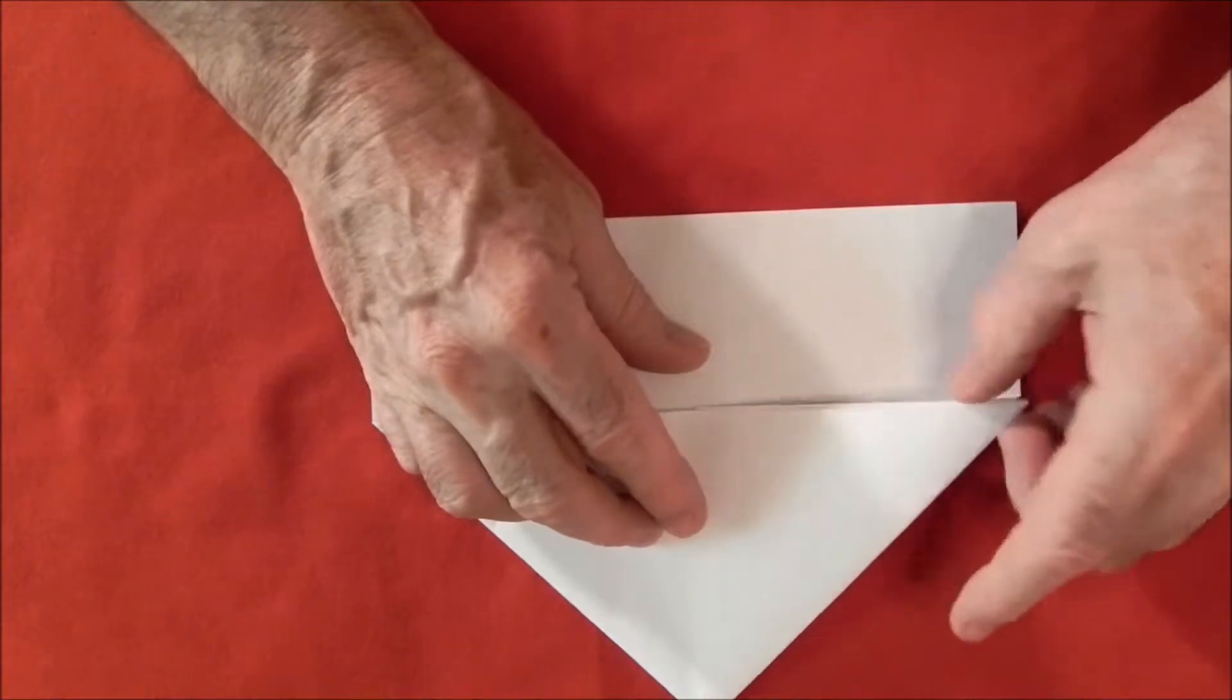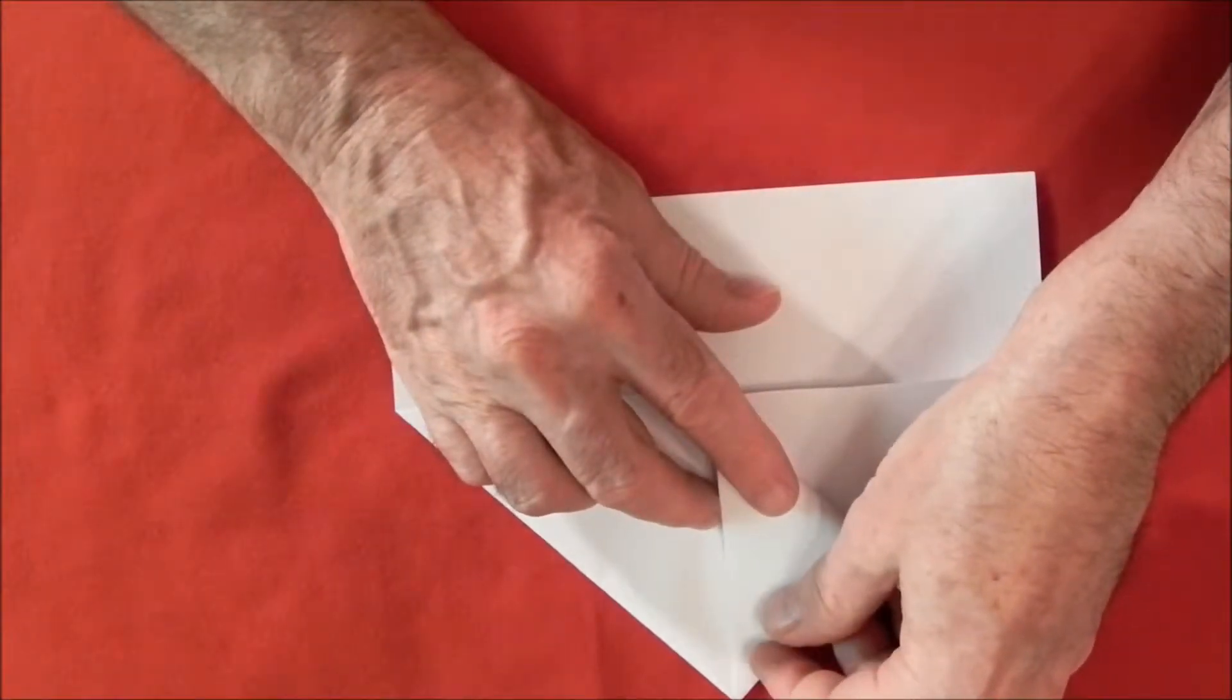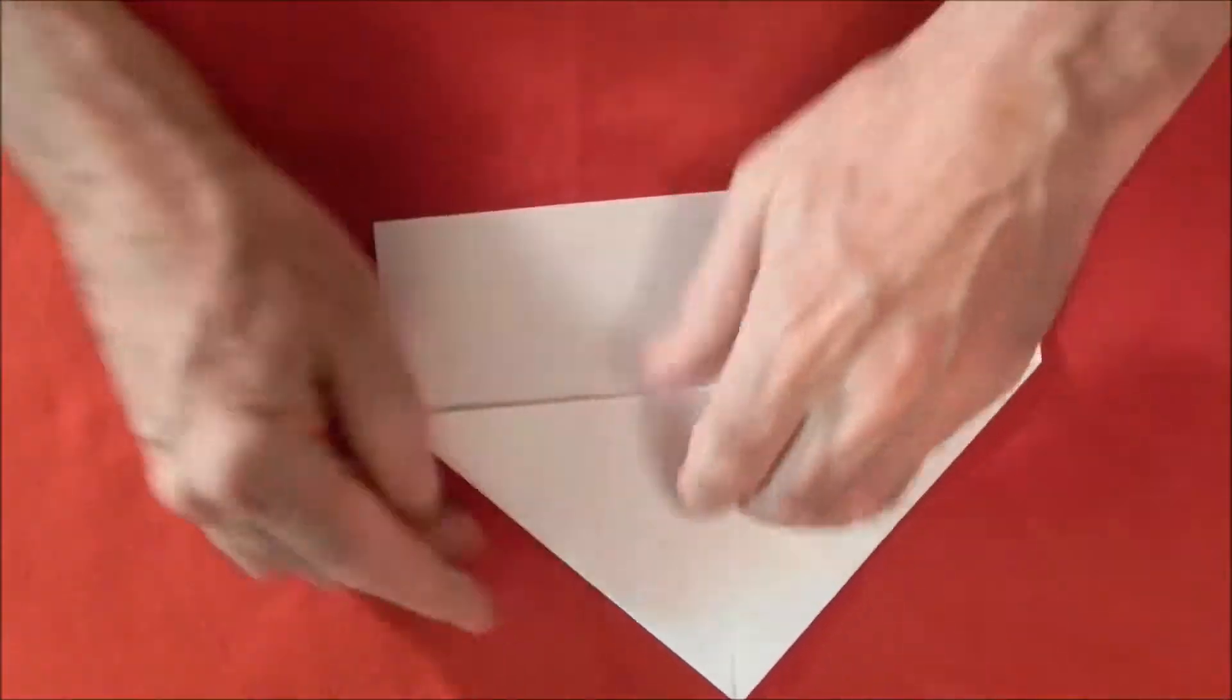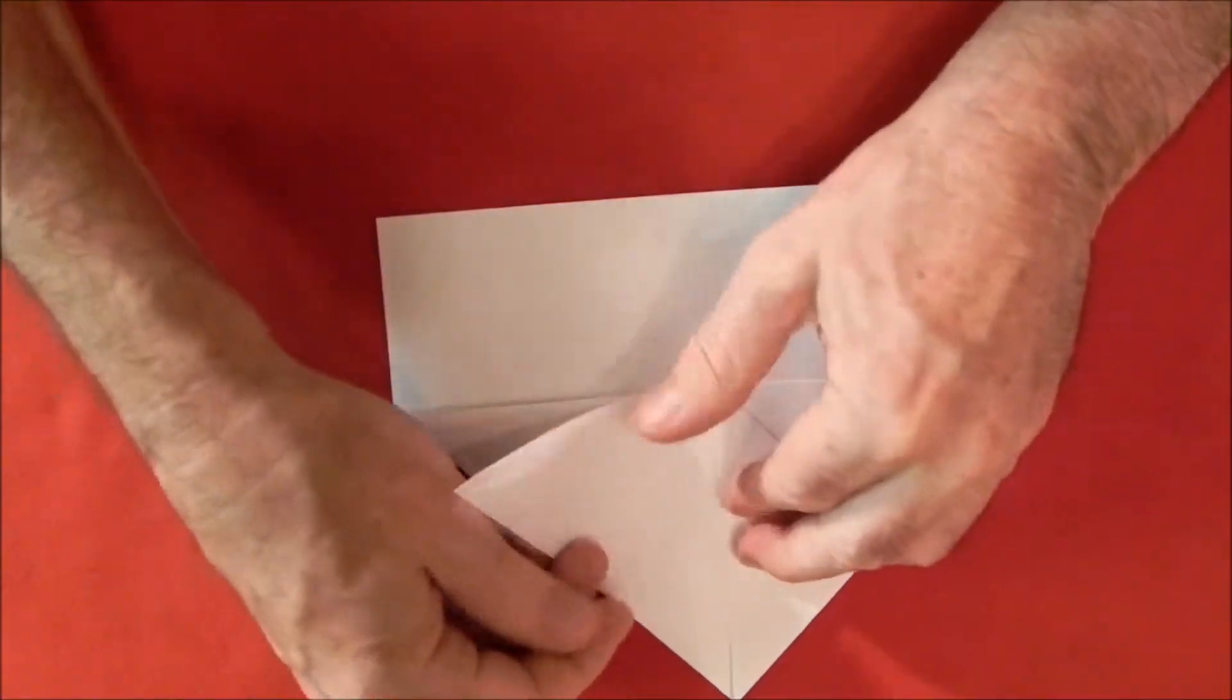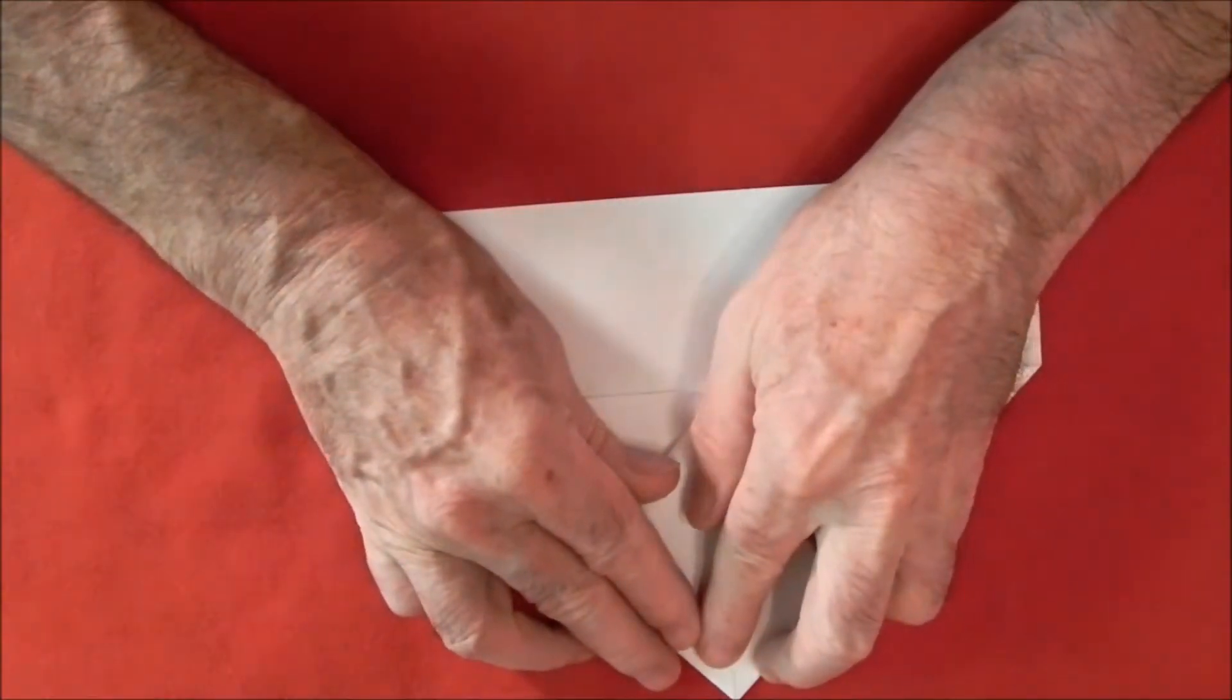Okay, now we're going to take one of these corners, bottom wings, and I'm going to fold it to the point, the top of the plane. That's one fold done. We'll do the same with this other side.